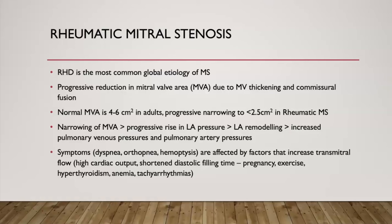Over the long run, elevated left atrial pressure causes remodeling of the left atrium and transfers pressure into the pulmonary venous and arterial systems, subsequently affecting the right heart. We see evidence of right heart dysfunction, functional tricuspid regurgitation, a large right atrium, and a large right ventricle. Symptoms are mostly shortness of breath on exertion, orthopnea, and paroxysmal nocturnal dyspnea. Right-sided symptoms appear with right heart involvement. Rarer symptoms include dysphagia (Ortner syndrome) from an enlarged left atrium pressing on the esophagus, and hemoptysis with chronic pulmonary arterial hypertension.